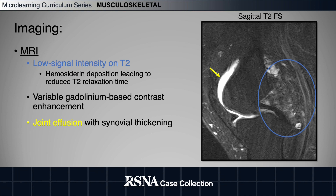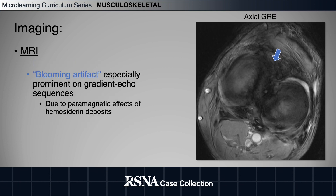TGCT characteristically exhibits low signal intensity on T2-weighted imaging due to hemosiderin deposition, which leads to reduced T2 relaxation time. Lesions may show variable degrees of post-gadolinium contrast enhancement. Additional findings of joint effusion with synovial thickening may also be seen. Blooming artifact may be especially prominent on gradient echo sequences, likewise as a result of paramagnetic effects exerted by hemosiderin.